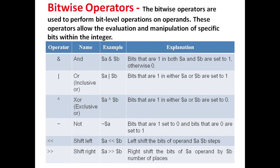Next is the Bitwise operator. The bitwise operators are used to perform bit-level operations on operands. These operators allow the evaluation and manipulation of specific bits within the integer. The AND operator gives the bits that are 1 in both a and b — those are set to 1, otherwise they are set to 0.